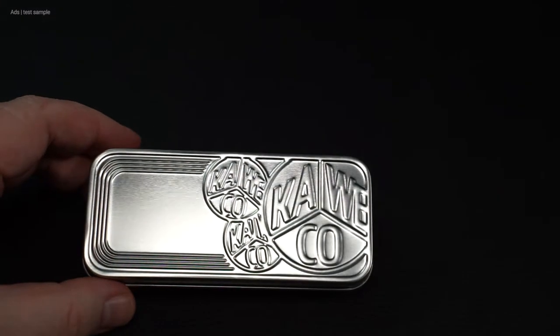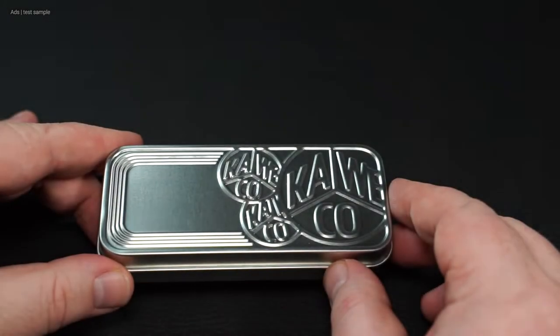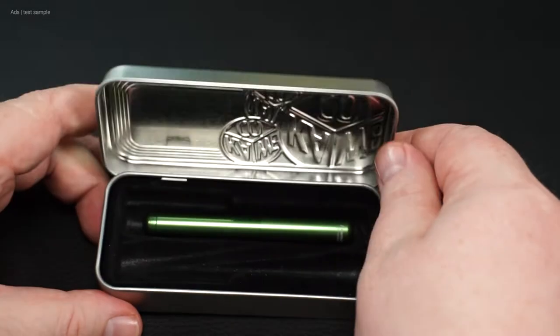Inside the green cardboard slipcase is the sturdy metal box Kaweco is known for. In it we have the small fountain pen.